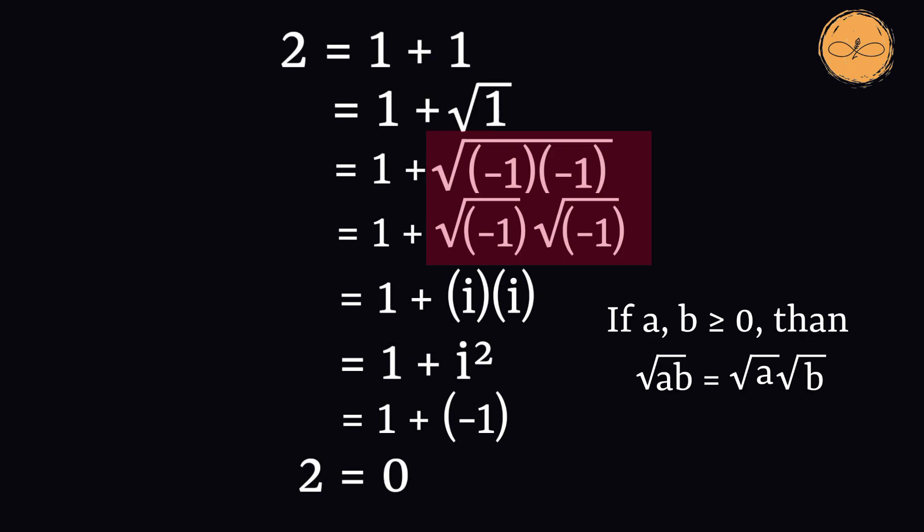And here in this case when both terms are negative 1, you can say that it's a mistake. Rest all of the other steps in the proof are valid.